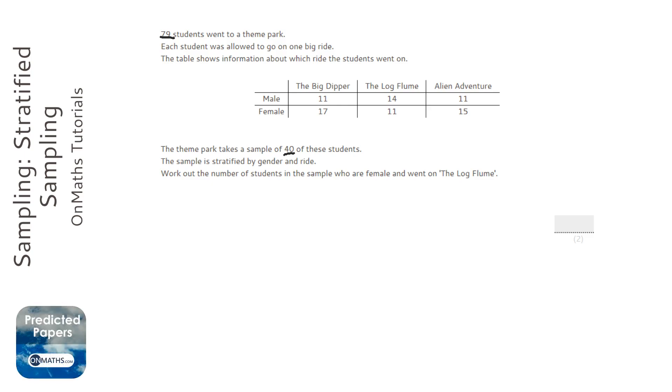We want the same proportions of who went on what ride. So we're looking at this one which is the 11, because it says a female who went on the log flume and 11 people did. Now it's 11 people out of the 79.